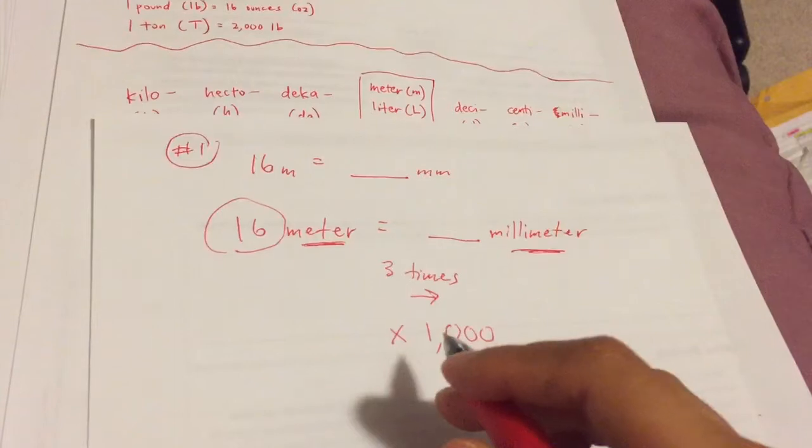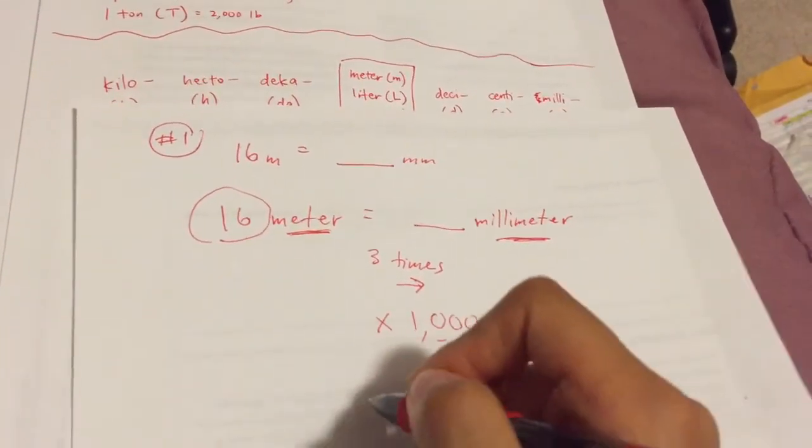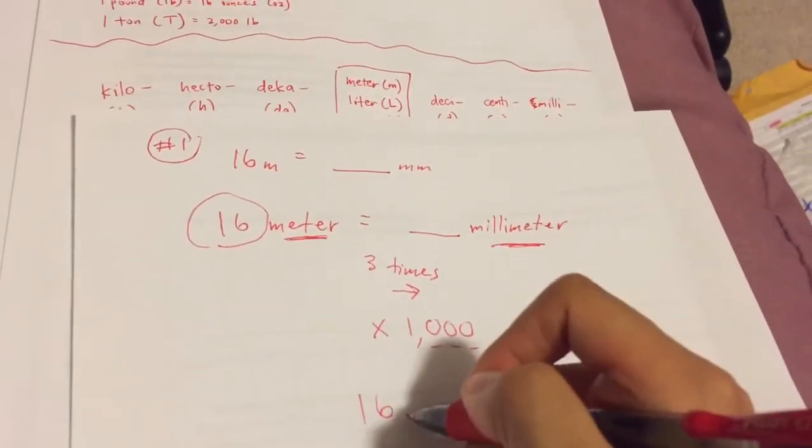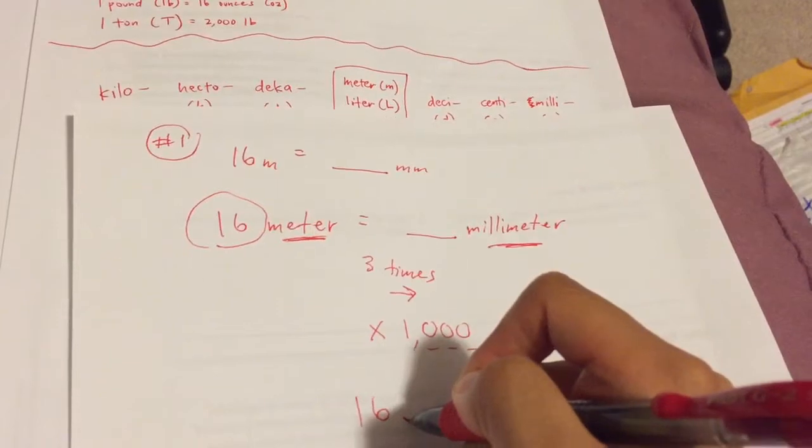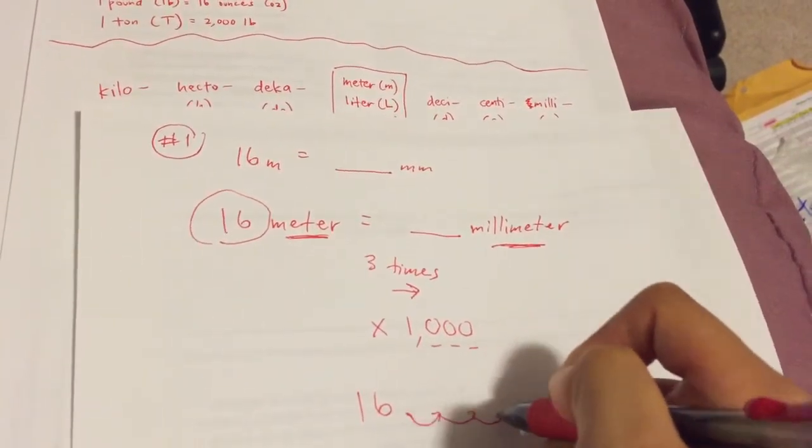The cool thing about this is that we know how to multiply by powers of 10. All we have to do is, if we're multiplying, we're going to move the decimal three times to the right. One, two, three.